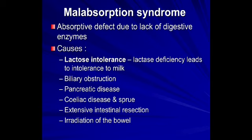As clinicians, the relevance of understanding digestion and absorption lies in recognizing malabsorption syndromes such as tropical sprue and celiac disease — absorptive defects due to lack of digestive enzymes. Lactase deficiency leads to lactose intolerance, biliary obstruction and pancreatic disease can also result in malabsorption. The commonest causes are celiac disease and tropical sprue, as well as extensive intestinal resection or irradiation.